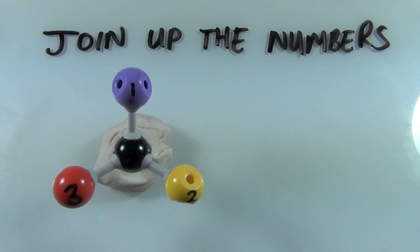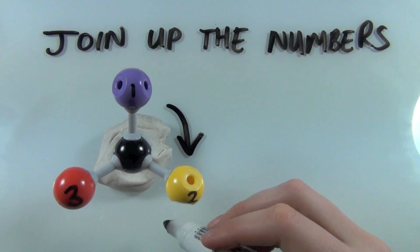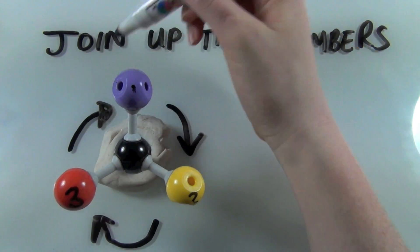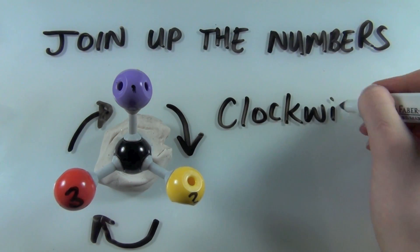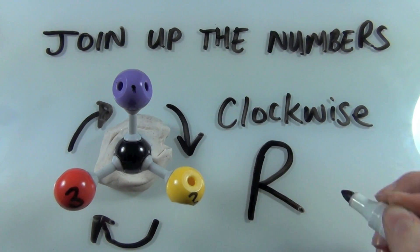Looking at the other enantiomer now, and joining up the numbers, because this time we joined up the numbers in a clockwise fashion, we call the configuration of the molecule R.